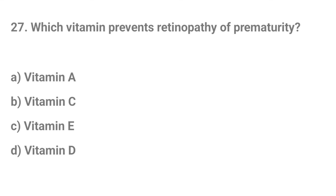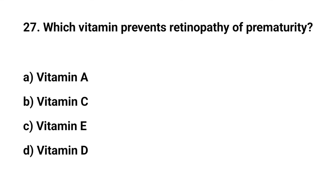Question number twenty-seven. Which vitamin prevents retinopathy of prematurity? The right answer is B: Vitamin E.